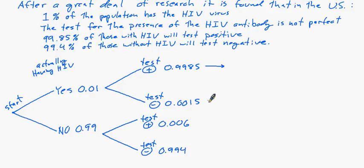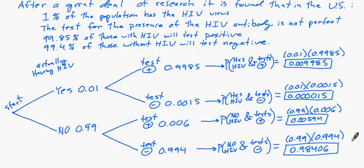We can get our sample space. Hopefully this is getting fairly familiar, so I'll just fill it in. Here are all the numbers, and I used descriptors. Instead of just 'yes, test positive,' this is 'has HIV and test positive.' This is 'has HIV but test negative' — so these are the false negatives. 'No HIV but test positive' are the false positives, and 'no HIV and test negative.'